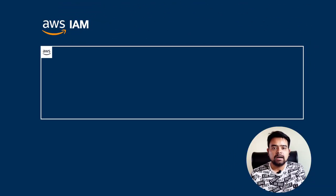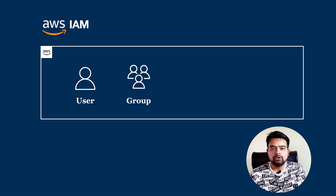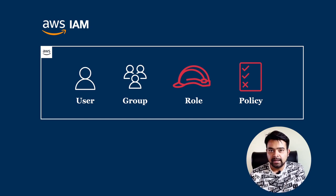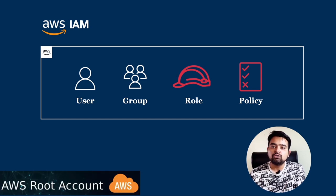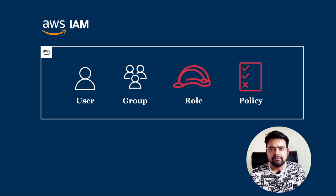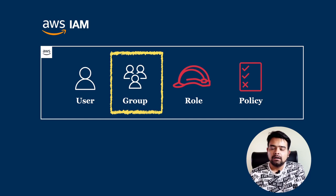Once we start learning about AWS IAM, these four things are very critical to understand: users, groups, roles, and policies. Users — as the name suggests — any person that can interact with the AWS console or access their services using any other medium is called a user. A root user is already created with the root account. With IAM, we are specifically talking about IAM users. A bunch of users can be termed as a group.